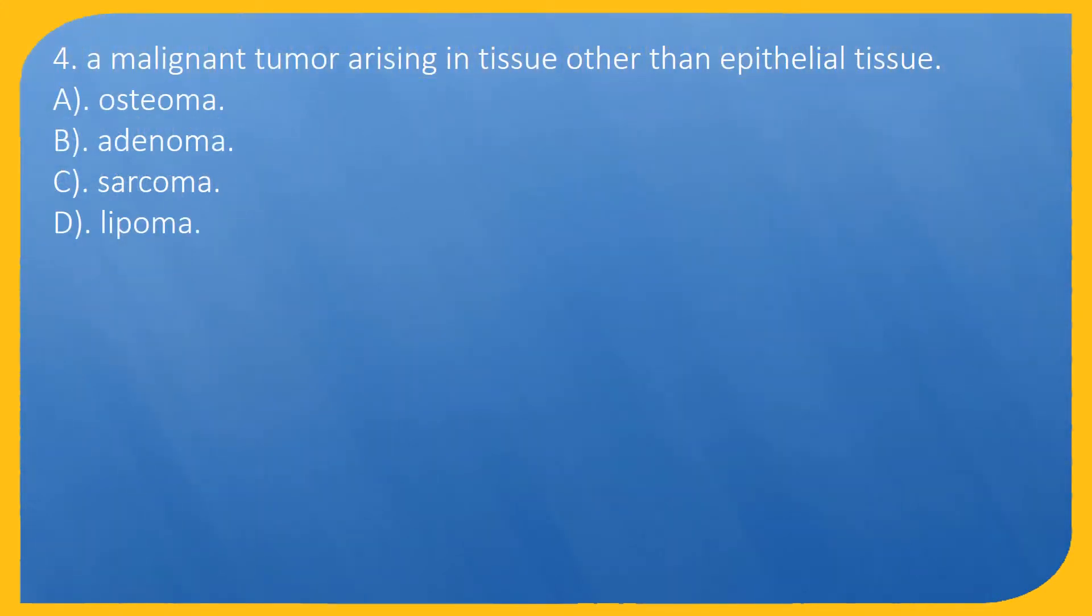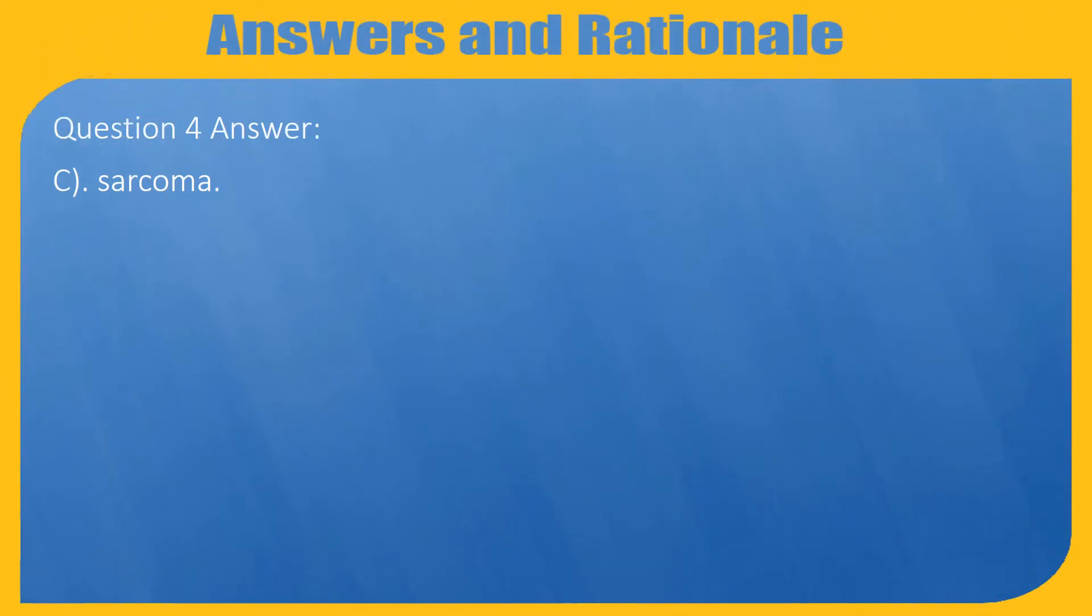Question 4. A malignant tumor arising in tissue other than epithelial tissue: A. Osteoma, B. Adenoma, C. Sarcoma, D. Lipoma. Question 4 Answer: C. Sarcoma.